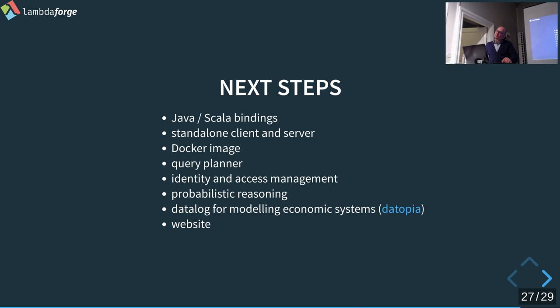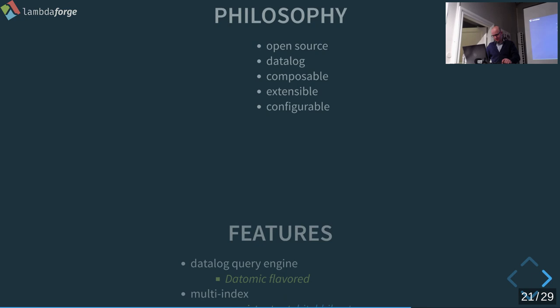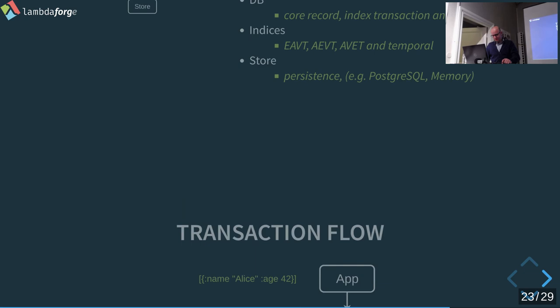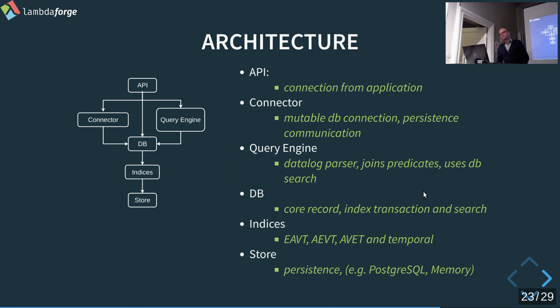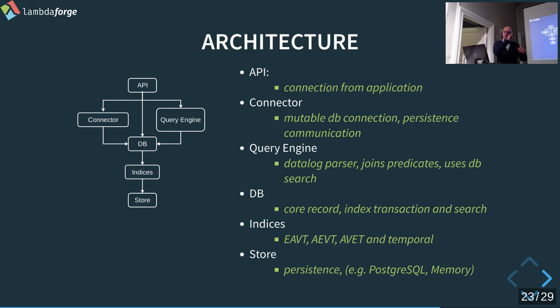Question about retractions: when data is deleted from the EAVT and AEVT indices, are historical queries slower? They are indexed — we have the three core indices and the same three indices as temporal indices, so six total. The history is a join of the six indices. Normal queries go to just the three core ones. So yes, history is slower because of the join, but it is still indexed.